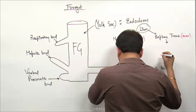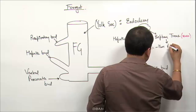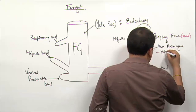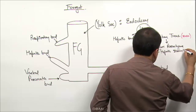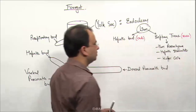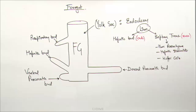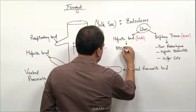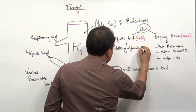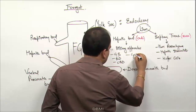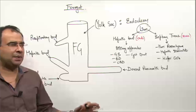The septum transversum gives rise to the liver parenchyma, including the hepatic sinusoids, and you can add Kupffer cells to this as well. The hepatic bud, on the other hand, will give rise to the biliary apparatus — that is the gallbladder, the bile duct, the common bile duct, the cystic duct, and even the bile canaliculi. The entire biliary apparatus comes from the hepatic bud.